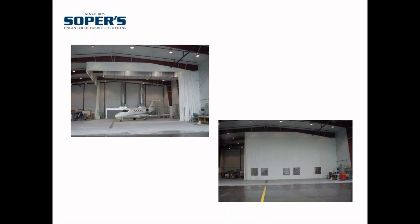We can also make these systems retractable. This one moves right to left — they wanted to be able to move a plane in here and do some sandblasting on it, without having the sandblast particles roll throughout the rest of the facility. These curtains easily move; there's a string that hangs from the top down and one operator can walk it down and close the system up.